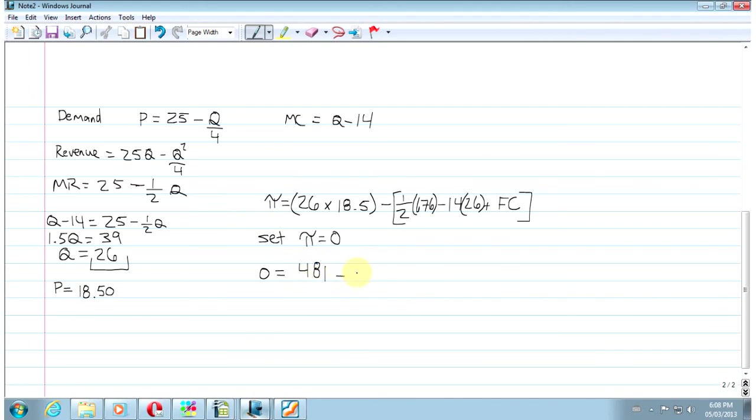So 0 equals 26 times 18.5. 481 minus 1 half times 676 is 338. Plus, well, minus a minus. So plus 14 times 26 is 364. Minus fixed cost. So you can see what I've got here is a bunch of numbers and something I don't know. So 0 equals 507 minus fixed cost. So fixed cost equals 507.